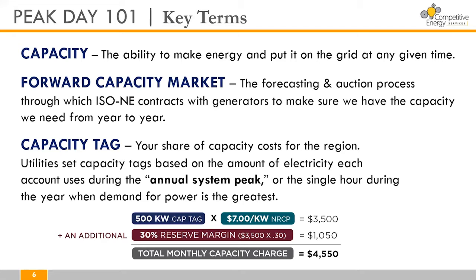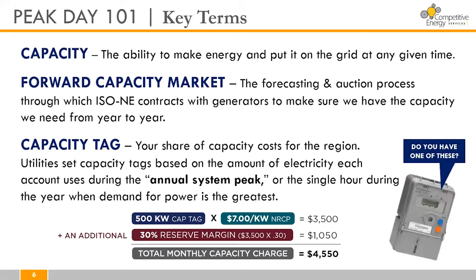It's important to know that not all electricity users can manage their capacity costs — only accounts with interval meters, otherwise known as telemeters, can manage their capacity tag. For electricity users with telemeters, the peak day of the year presents an opportunity to curtail electricity usage, lower your capacity tag, and reduce total electricity costs.